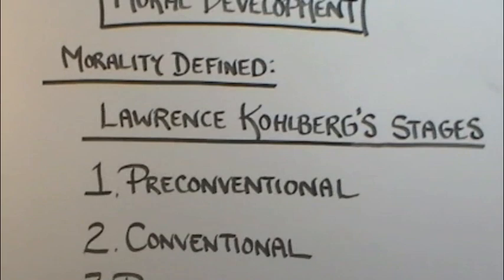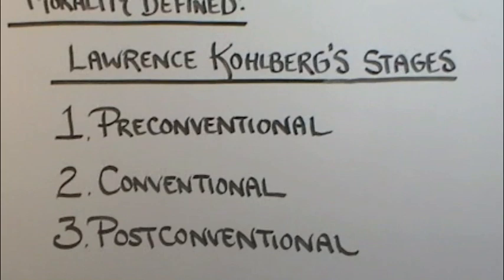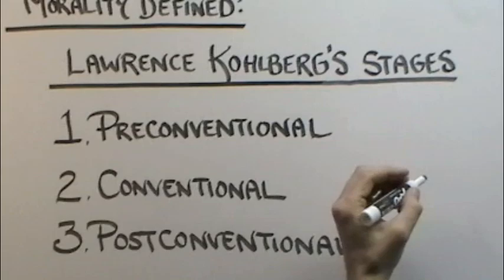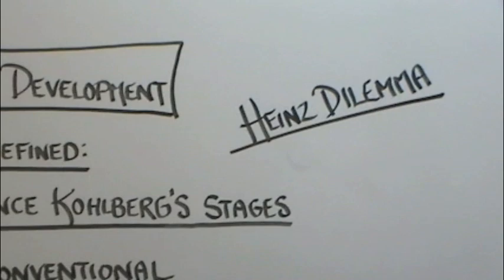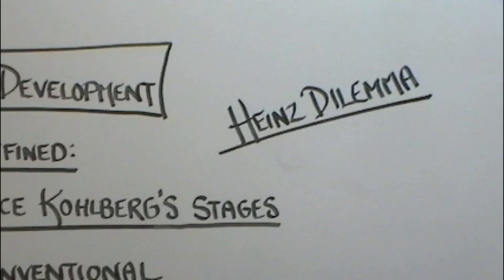So let's start with the first one. Kohlberg, when reasoning in terms of moral development, used a test which is called the Heinz Dilemma. What I'm going to do is put the Heinz Dilemma up on the screen for a second and allow you to read it, so you understand where Lawrence Kohlberg is getting his research from.